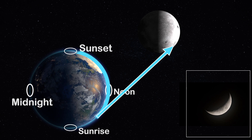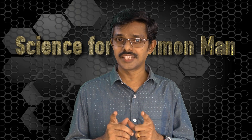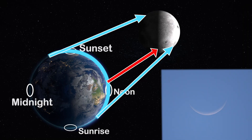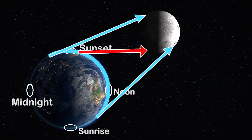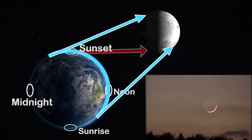During the daytime, since the Sun is illuminating the atmosphere, we will not be able to notice the waxing crescent until sunset. During sunset, when the Sun disappears, the waxing crescent becomes more and more visible — we see it during sunset and shortly after sunset when we look towards the west.